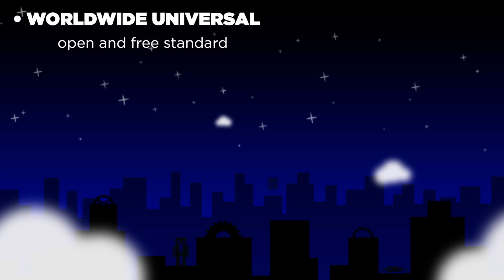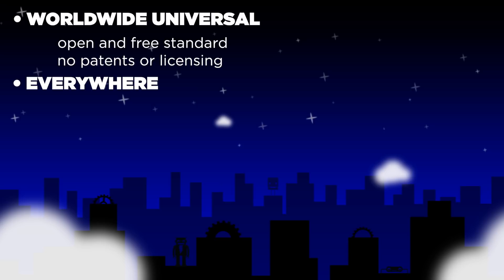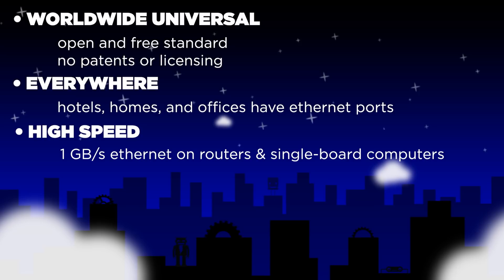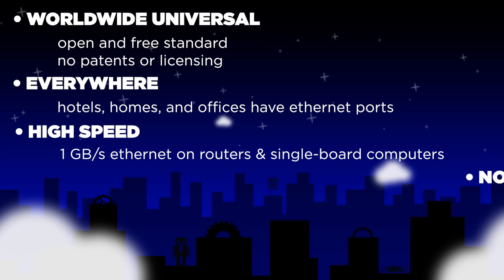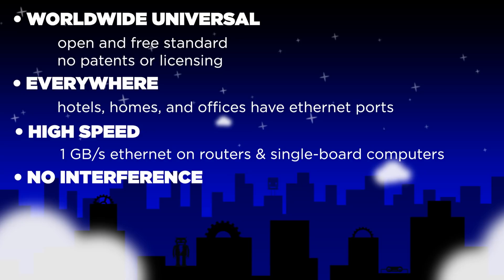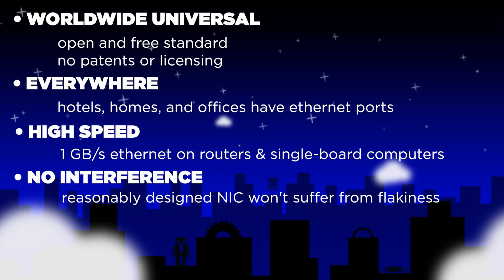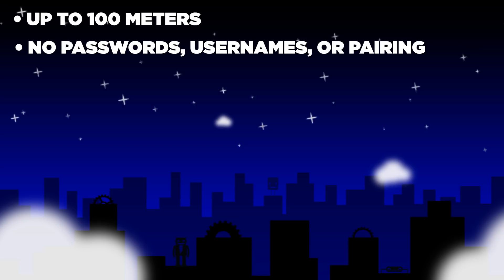There are no patents, no licensing. Just about every hotel, home and office has an Ethernet port for connecting to the Internet already. It's high speed — one gigabit per second Ethernet is available on many routers and single board computers. Even the slowest 10BaseT Ethernet has better throughput than legacy Wi-Fi like 802.11 B or G. There's no interference from other wireless protocols, no dropouts. A reasonably designed NIC won't suffer from flakiness. It can go up to 100 meters on a single cable. There's no passwords, username or pairing — you just plug it in and go. It's fairly inexpensive to implement; many chips have a built-in Ethernet MAC, so you only need a PHY and a plug.